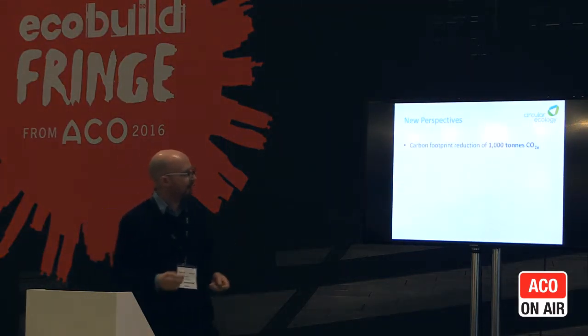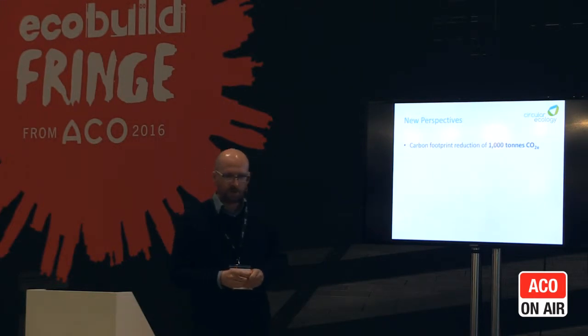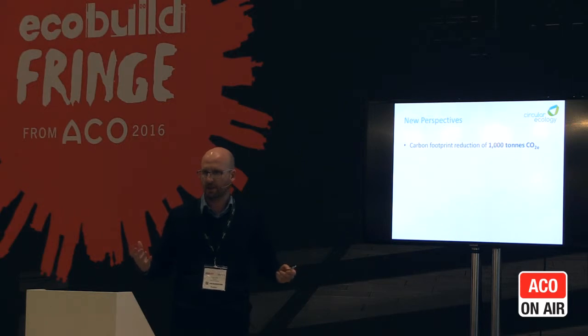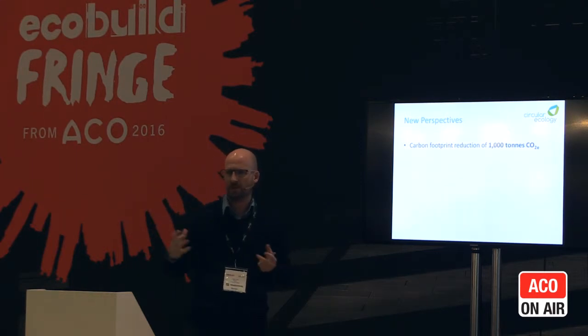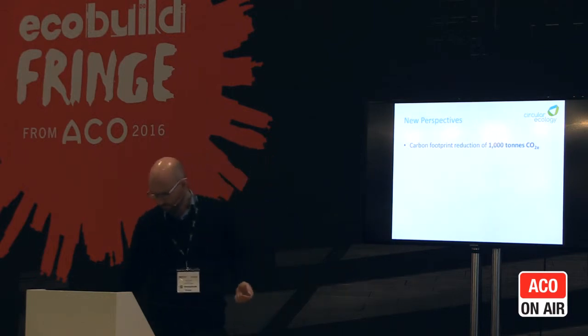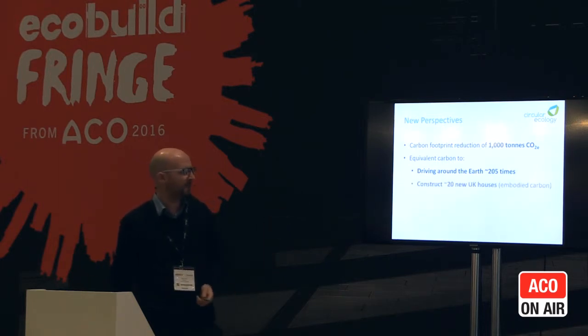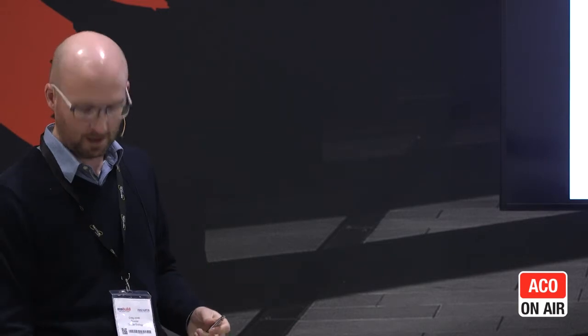The final slide tries to put in perspective what a thousand tons of CO2e actually is. I think far more needs to be done on putting carbon emissions in perspective — unlike water, which people interact with daily, carbon quantities are hard to visualize. A thousand tons of CO2e is equivalent to driving around the earth in an average modern fuel-efficient car 205 times, constructing 20 new UK houses, or powering 30,000 TVs for two hours a day for a whole year. We need to put carbon in perspective to get even more value out of carbon accounting.